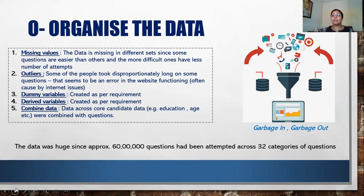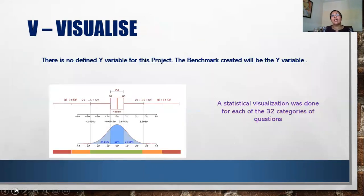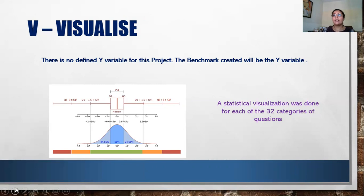The data was quite huge — approximately 60 lakh questions had been attempted across 32 categories by a multitude of candidates. We've been in existence since 2017, so we had all the data. Then came the question of what would be a good visualization of this data. For each of the 32 categories of questions, we found that looking at a normal distribution and understanding how the questions and scores were panning out made a lot of sense.